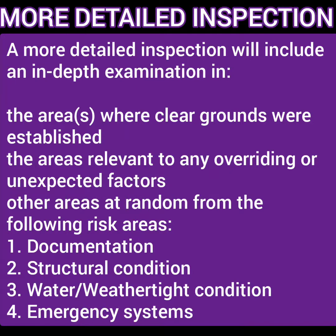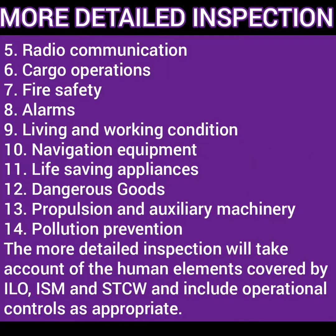A more detailed inspection will include an in-depth examination in areas where clear grounds were established, plus areas relevant to any overriding or unexpected factors, and areas selected at random from the following risk areas: documentation, structural condition, water weathertight condition, emergency systems, radio communication, cargo operations, fire safety, alarms, living and working conditions, navigational equipment, life-saving appliances, dangerous goods, propulsion and auxiliary machinery, and pollution prevention. The more detailed inspection will also take account of the human element covered by ILO, ISM, and STCW, and include operational control as appropriate.